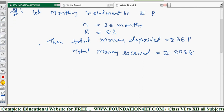From these two statements, we can find out the simple interest first. So simple interest is equals to the total money received minus the deposited money. So total money received is 8088, maturity value minus the deposited amount is 36P. Let me equation one.